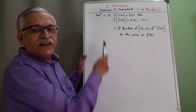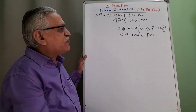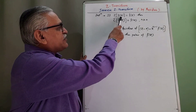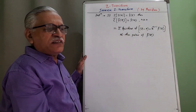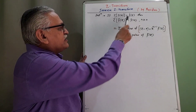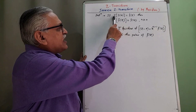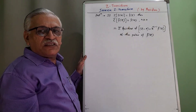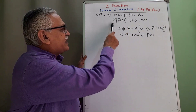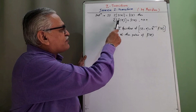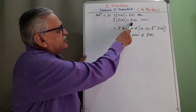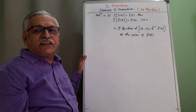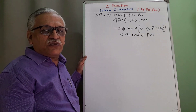Let us define the term inverse Z transform. If Z transform of F(N) is F̄(Z), then transferring the operator to the right hand side, we get inverse Z transform of F̄(Z) as F(N), with the condition N greater than or equal to zero.